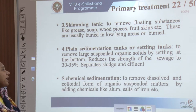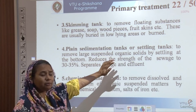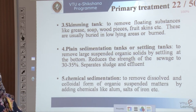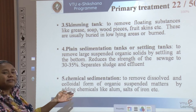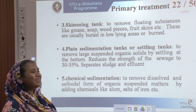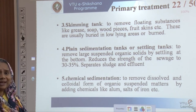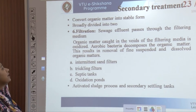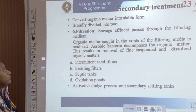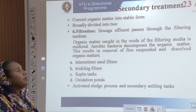Plain sedimentation tanks or settling tanks remove large suspended organic solids by settling at the bottom. The strength of the sewage is reduced by 30 to 35 percent by the time it enters the sedimentation tanks, which separate sludge and effluent waste. After separation it enters the chemical sedimentation area, where dissolved and colloidal organic suspended materials are segregated by adding chemicals like alum and salts of iron. After this, conversion of organic matter into stable form takes place, leading into the secondary treatment.